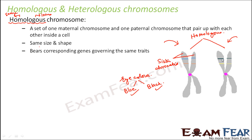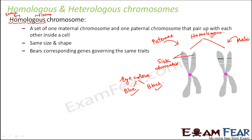The version can be different — one can say blue eye color and the other can say black eye color, but both genes should represent eye color. It should not happen that one position represents eye color and the other represents hair color — both should represent the same thing. One of them is paternal and the other is maternal. This is what we call a homologous chromosome.